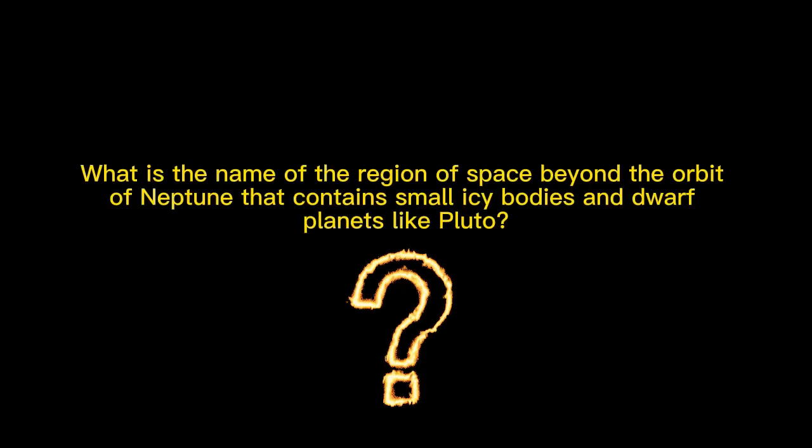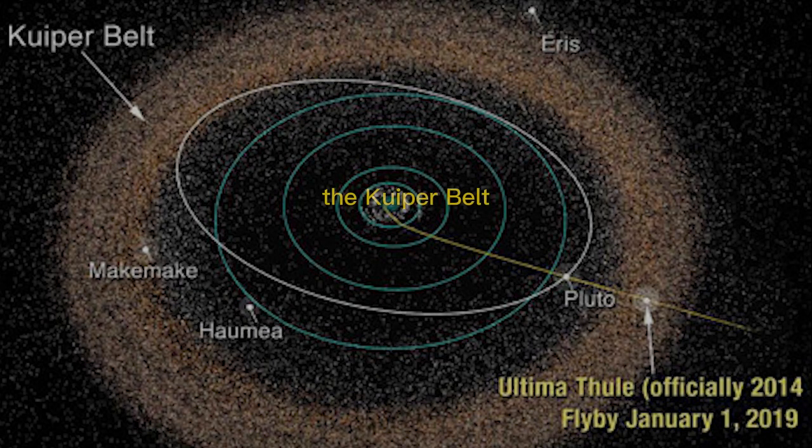What is the name of the region of space beyond the orbit of Neptune that contains small, icy bodies and dwarf planets like Pluto? The Kuiper Belt. Level 3, Challenging.